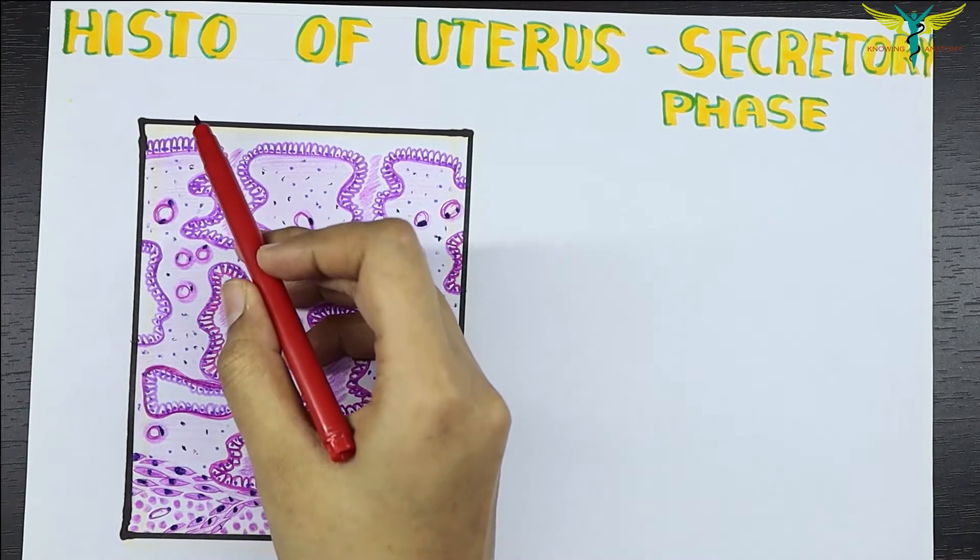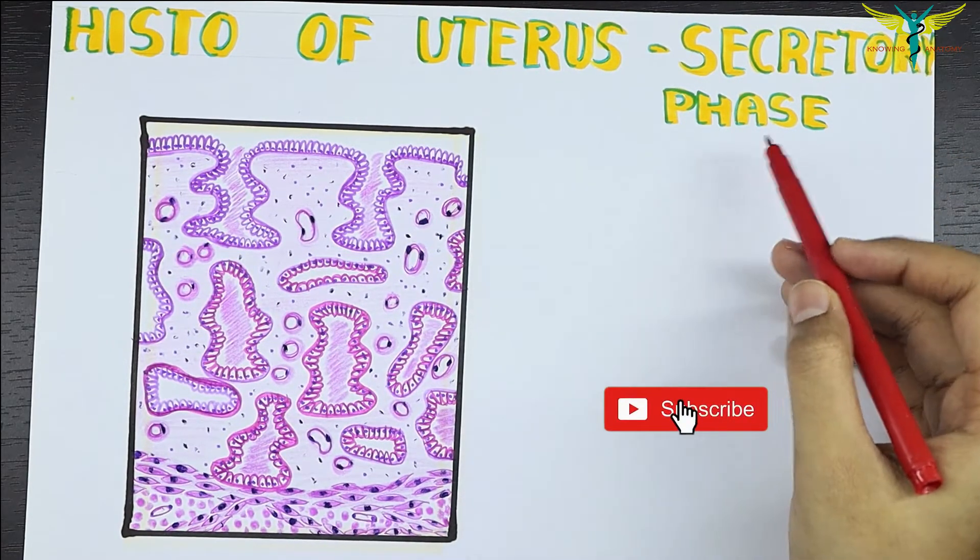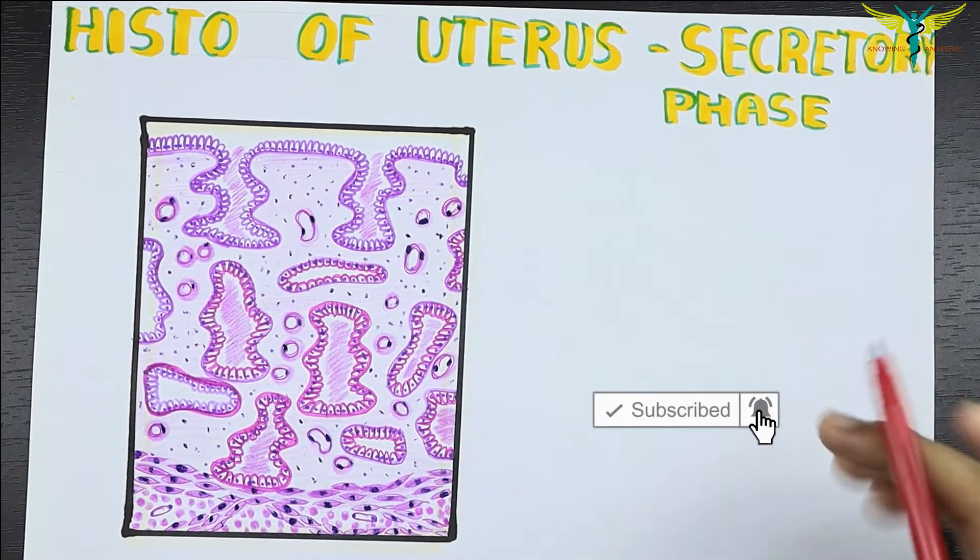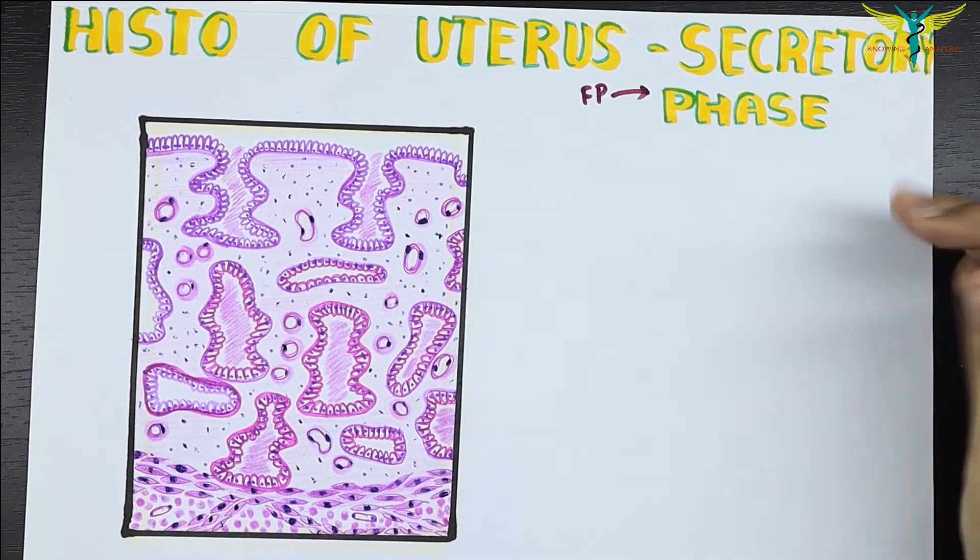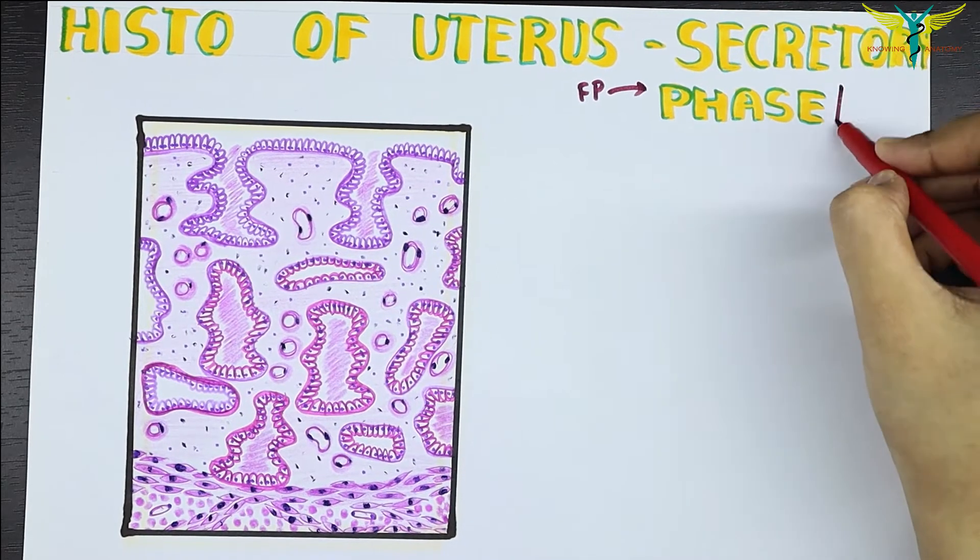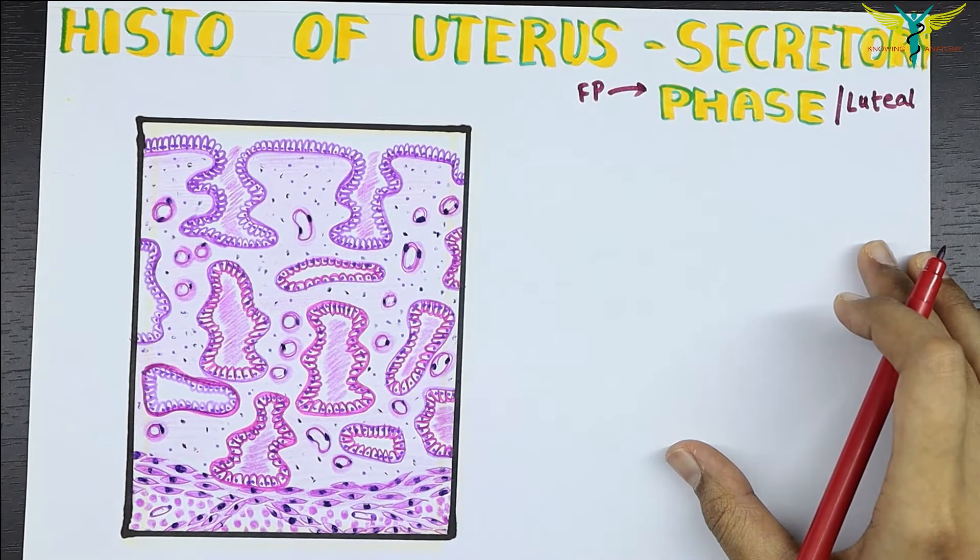In this video, let's learn about the histology of the uterus during the secretory phase. What is the secretory phase? The secretory phase is the next phase after the follicular phase, and this phase is also called the luteal phase. This phase occurs from day 14 to 28 of the cycle.